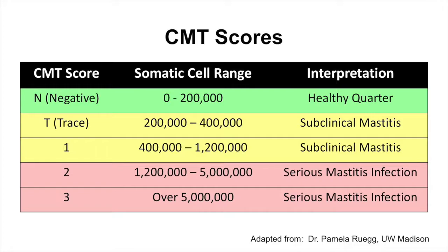Dr. Pamela Roug at the University of Wisconsin-Madison put together a chart with a somatic cell score — negative, trace, 1, 2, and 3 — each with a corresponding somatic cell range. When taking samples, you observe the degree of clumpiness when the two solutions are combined. For example, if a sample scores a 2, that particular quarter would have an average somatic cell range of 1.2 million to 5 million cells per milliliter, indicating a serious mastitis infection. The CMT provides a very easy and quick way to evaluate individual cows on the farm.